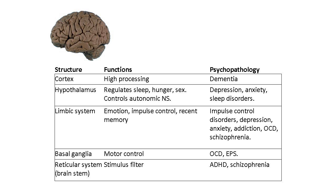The hypothalamus is a portion of the brain that regulates processes such as sleep, hunger, and sex drive. When the hypothalamus is affected, you get problems such as depression, anxiety, and sleep disorders.